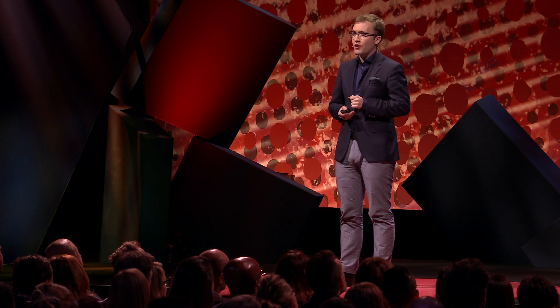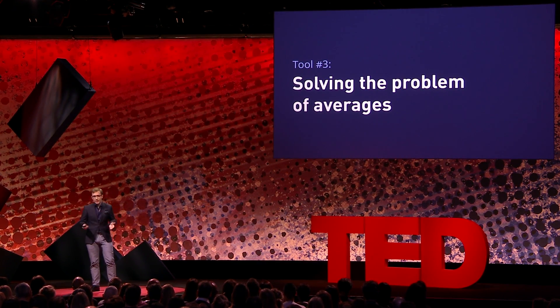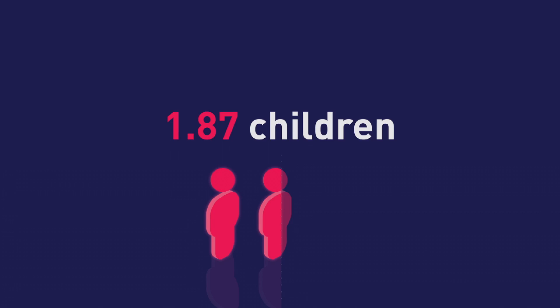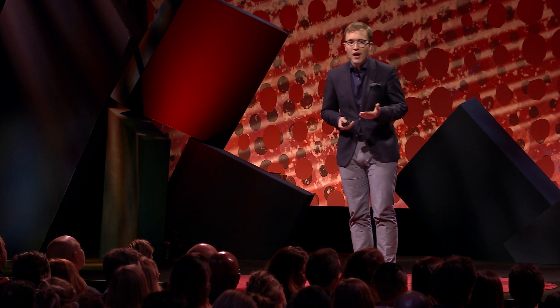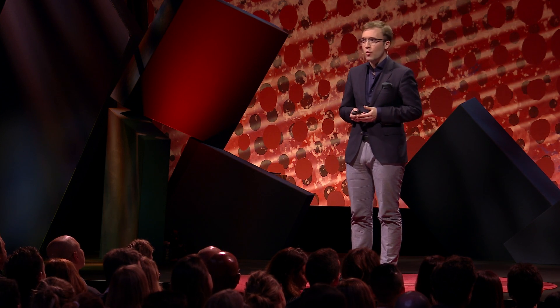There's still one more data trap you might find yourself in — I like to call it solving the problem of averages. Data is often presented at the wrong level of detail, in aggregate or as an average. In 2017, the fertility rate in the United States, as measured by the number of children born per woman during her lifetime, was 1.87. We know that no one is having exactly 1.87 children. Intuitively, this means many women are having two children, some are having zero or one, and some are having more than two. But this type of intuition about data isn't always so obvious.